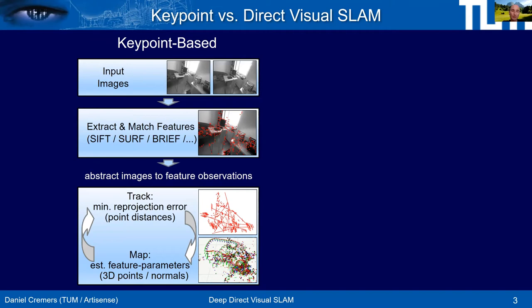The classical pipeline follows Kruppa's pioneering work fairly closely. We start with two images, extract points, and identify correspondences — typically by descriptor matching using SIFT, SURF, BRIEF, or more recently deep learning-based descriptors. If descriptor matching doesn't work sufficiently, we deploy techniques like RANSAC for alternating model and correspondence estimation. With a good set of corresponding points, we run reconstruction by bundle adjustment to determine camera motion and 3D structure.